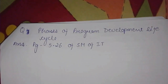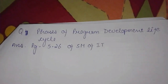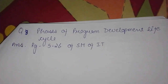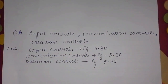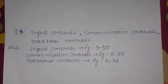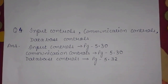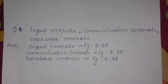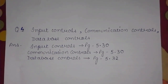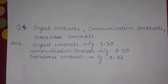Question 3 is Phases of Program Development Life Cycle, in short PDLC phases. The answer is on Page 5.26 of the Study Material of IT. Question 4 covers Important Controls: Communication Controls and Database Controls. Answers can be found on Page 5.30 for Input Controls, Page 5.30 for Communication Controls, and Page 5.32 for Database Controls.